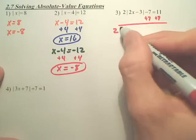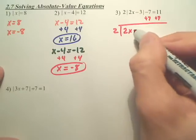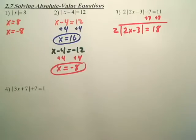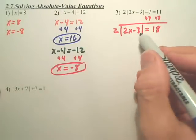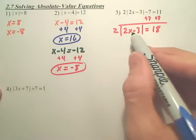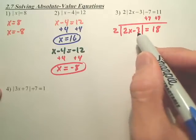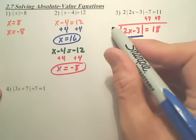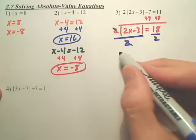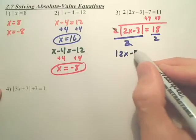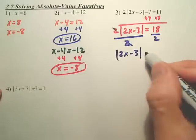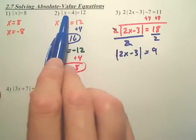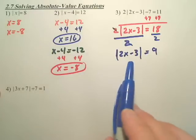I now have 2 absolute value of 2x minus 3 equals 18. Now, the absolute value still is not by itself. That 2 means 2 times the absolute value of blank. So how do you undo a times? Divide. So now I'm going to divide by 2. Those will cancel. I now have the absolute value of 2x minus 3 equals 18 divided by 2 is 9. Does this problem look a lot like this one? Yes. The absolute value is isolated.